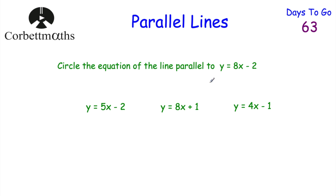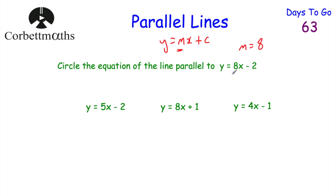The first question says: circle the equation of the line that is parallel to y equals 8x subtract 2. Feel free to pause and think which of these three lines is parallel: y equals 5x minus 2, y equals 8x plus 1, or y equals 4x minus 1. If two lines are parallel, they've got to have the same gradient. The gradient of y equals 8x subtract 2 is 8, and the gradient of y equals 8x plus 1 is also 8, so if you circled that one, well done.